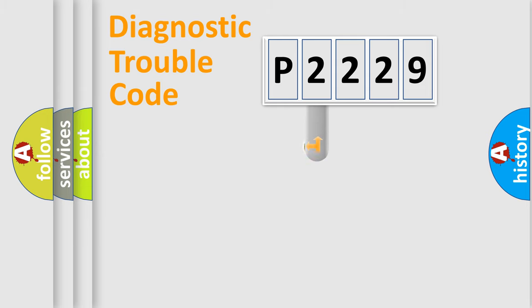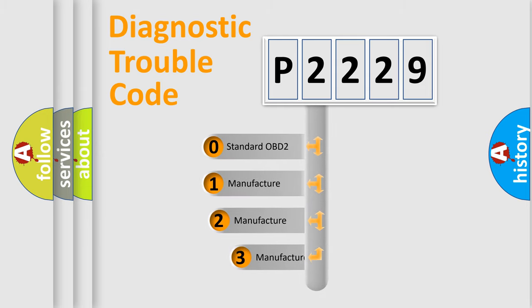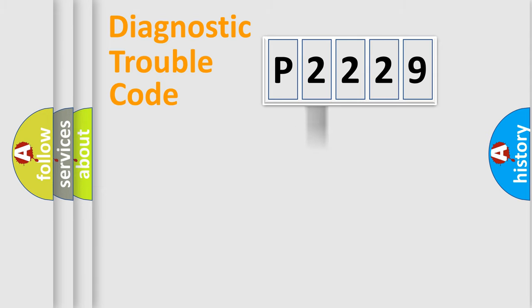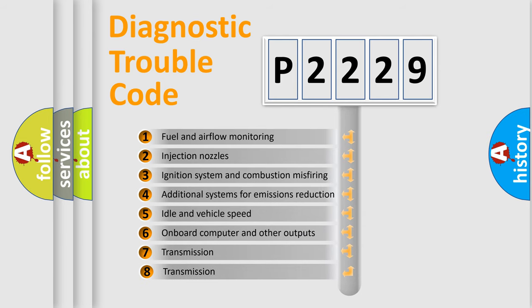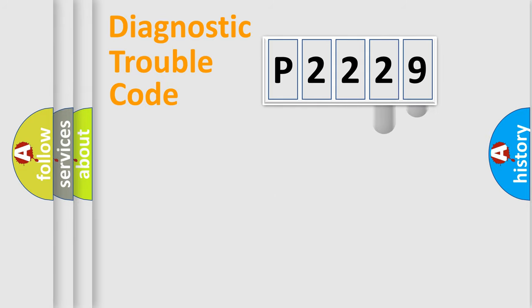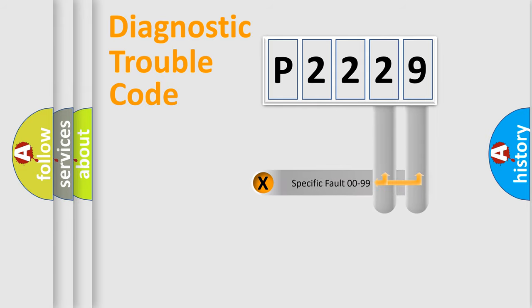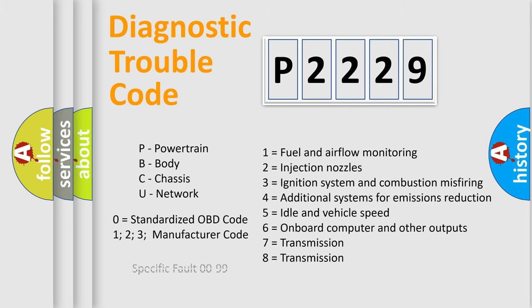This distribution is defined in the first character of the code. If the second character is expressed as zero, it is a standardized error. In the case of numbers 1, 2, or 3, it is a manufacturer-specific error expression. The third character specifies a subset of errors. This distribution is valid only for the standardized DTC code, and only the last two characters define the specific fault of the group. Such a division is valid only if the second character code is expressed by the number zero.